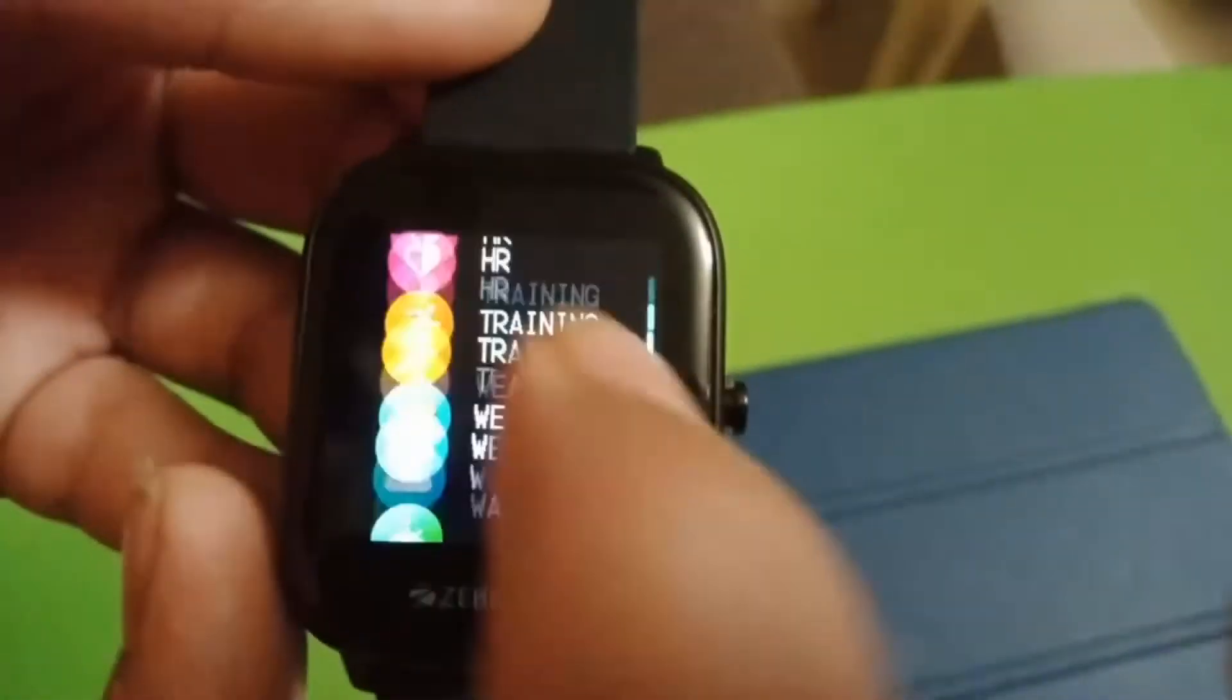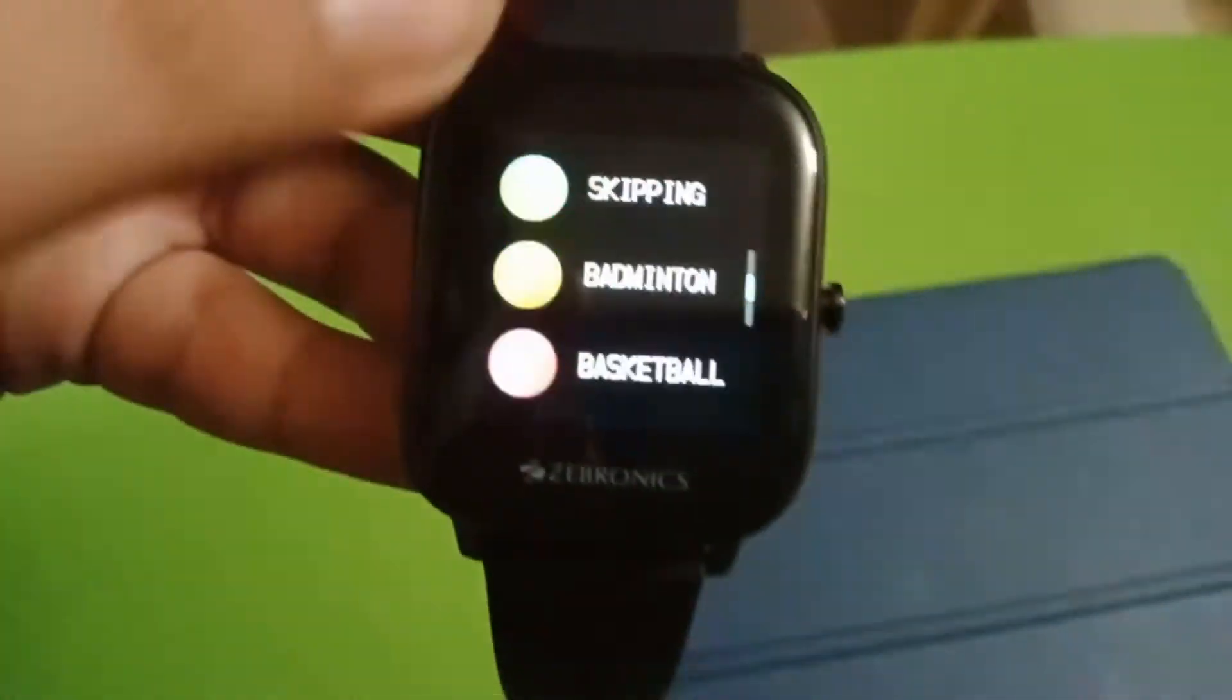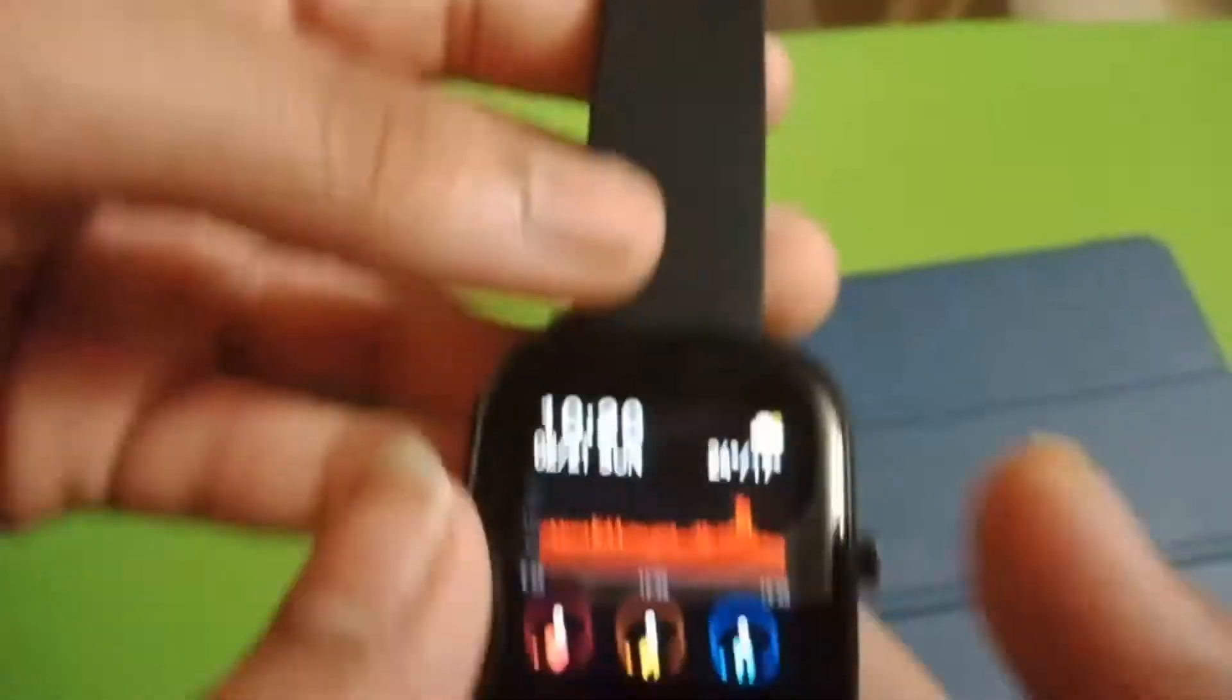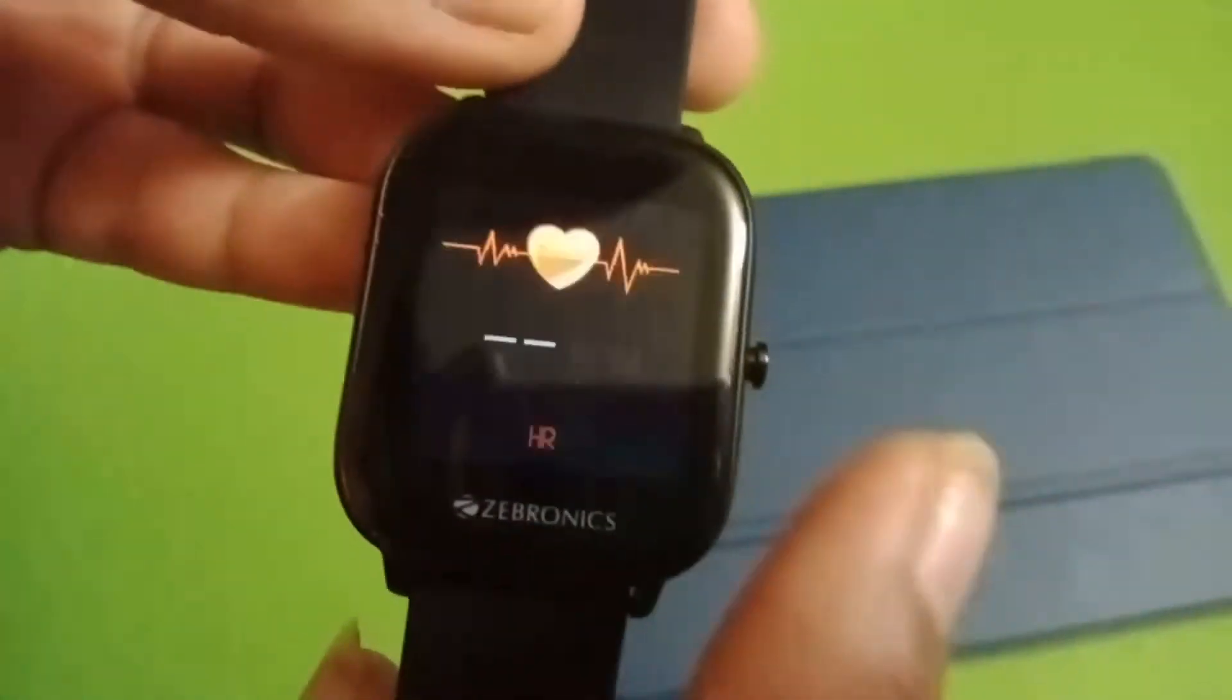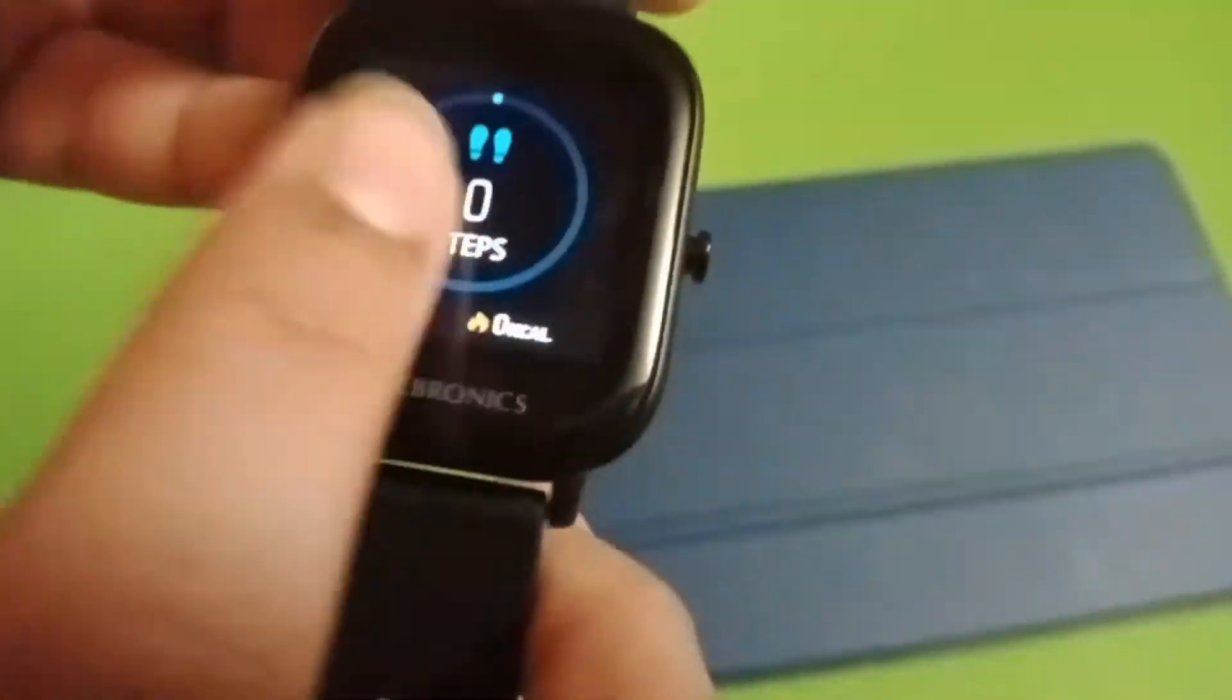So let's check out the training mode. The transitions are very smooth as you can see in the video. In the training we have walking, running, cycling, skipping, badminton, basketball, and football. When you swipe up left you have sleep monitoring, heartbeat, and steps.